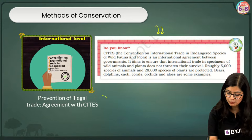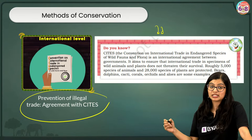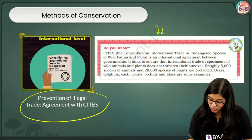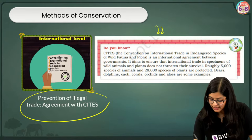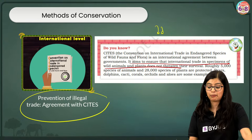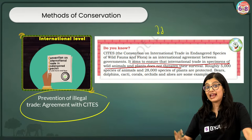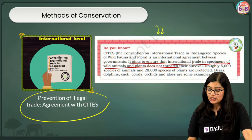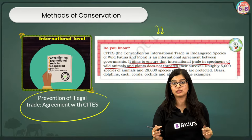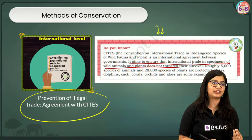Another method of conservation is preventing illegal activities through CITES — the Convention on International Trade in Endangered Species of wild fauna and flora. Their main aim is to ensure that international trade in specimens of wild animals and plants does not threaten their survival, preventing illegal trade that would hamper the survival of wildlife. Making poaching illegal also helps protect the numbers of wildlife.